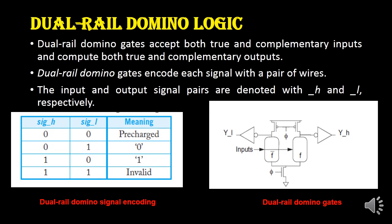First let us see dual rail domino logic. Dual rail domino logic gates encode each signal with a pair of wires — a low value as well as a high value. The main characteristic of this dual rail domino logic is that it takes the true input as well as its complementary input, then produces true output as well as its complementary output.